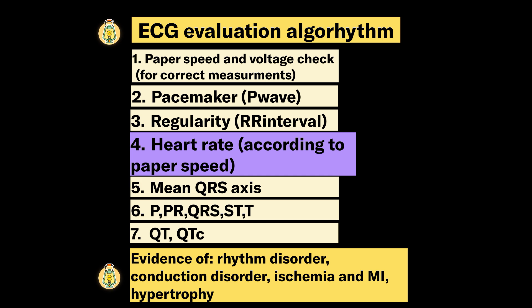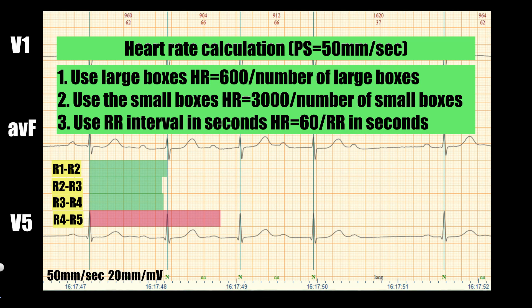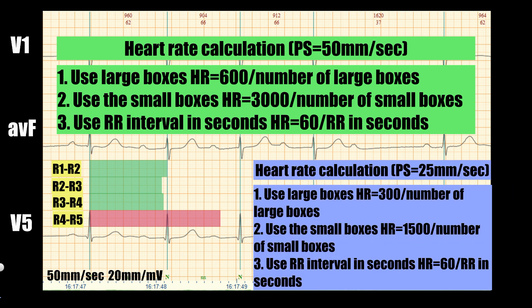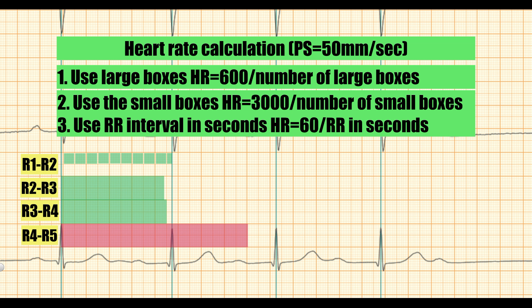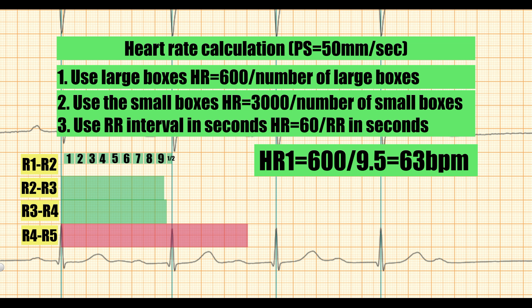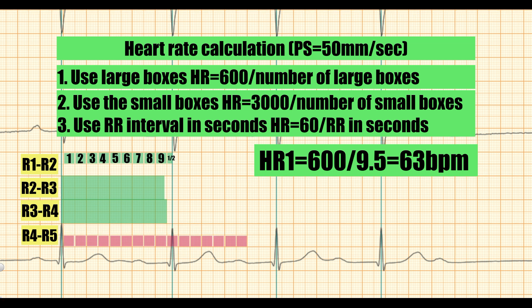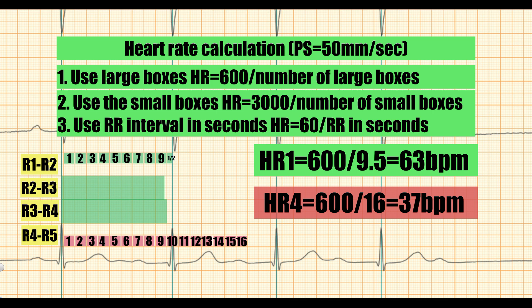The next step is heart rate calculation according to paper speed. Using large boxes: calculate how many large boxes the RR interval consists of. In our case it is 9.5 large boxes, so 600 divided by 9.5 gives a heart rate of 63 beats per minute in the first RR interval. For the bigger RR interval we have 16 large boxes, giving a heart rate of 37 beats per minute.